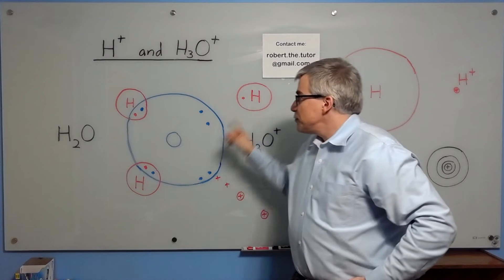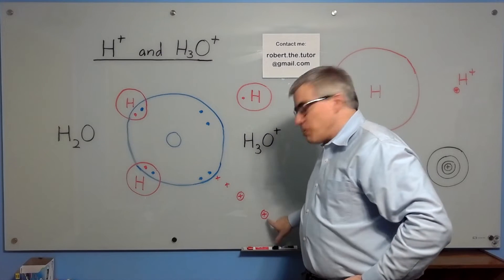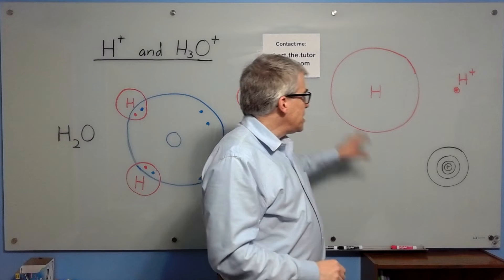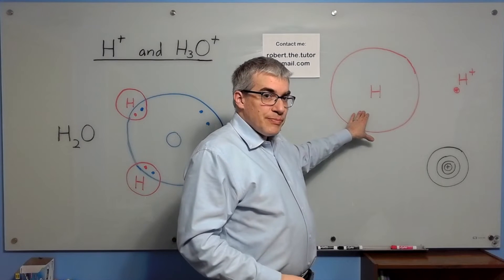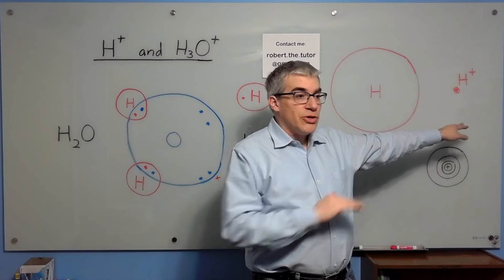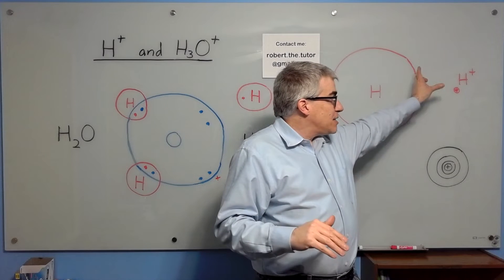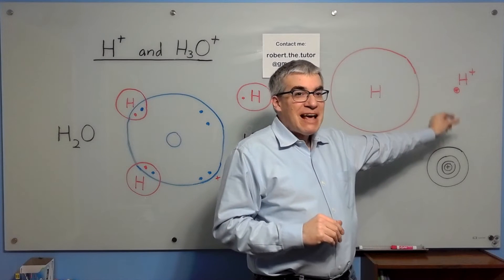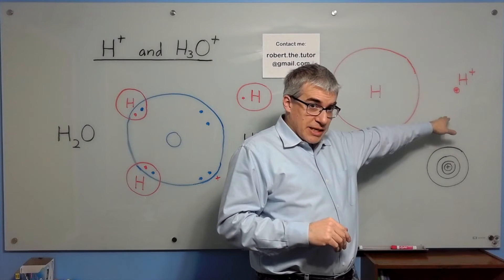But what if instead of a hydrogen atom, it was an H-plus? See, compared to a hydrogen atom, an H-plus is a bare proton. It has no electrons at all. No electron orbitals. It is shrunk down by a factor of 10,000, so it wouldn't even be a pinpoint on this scale.